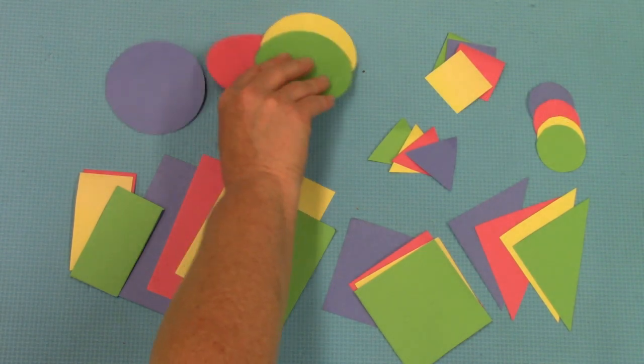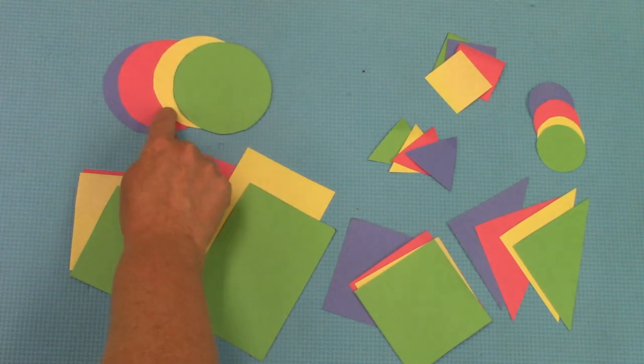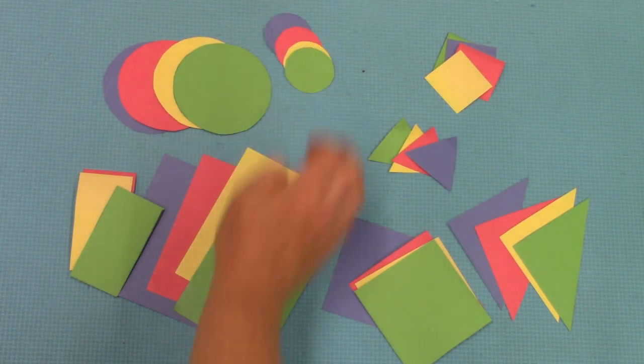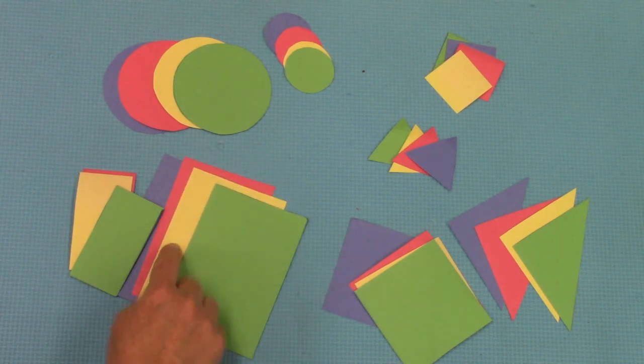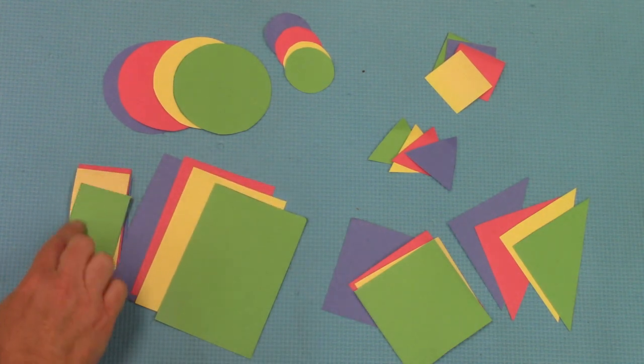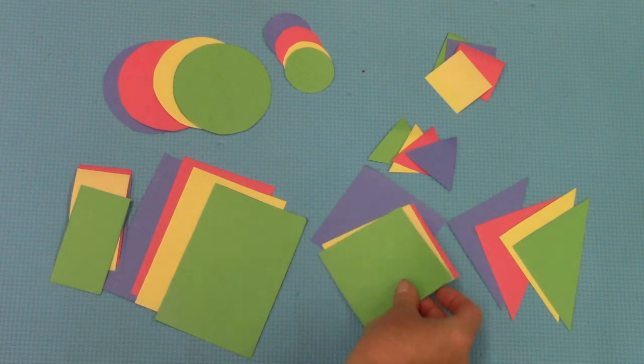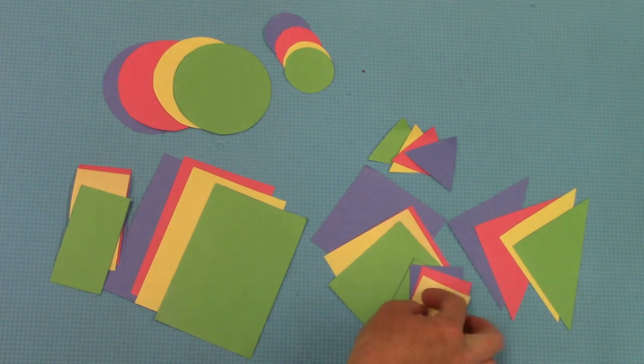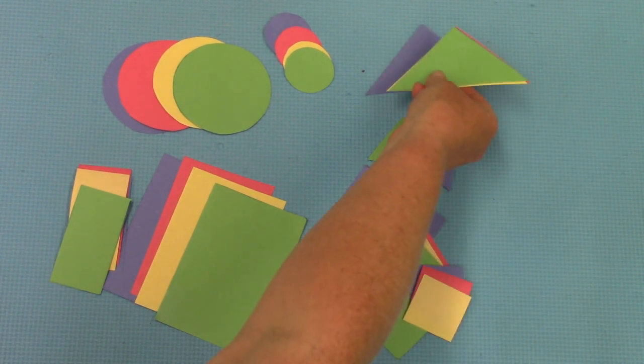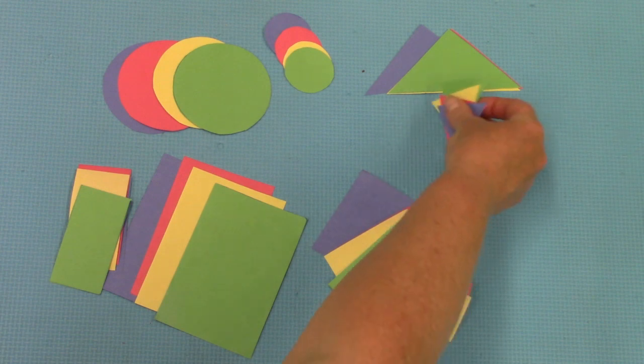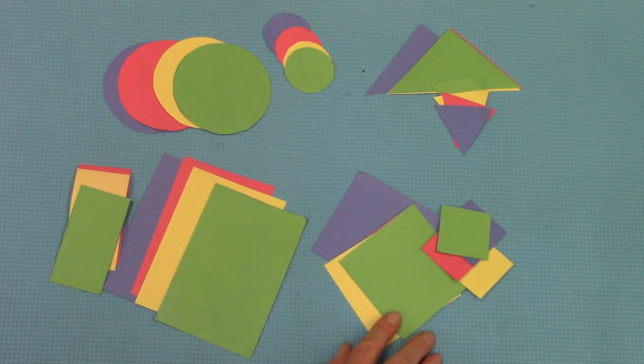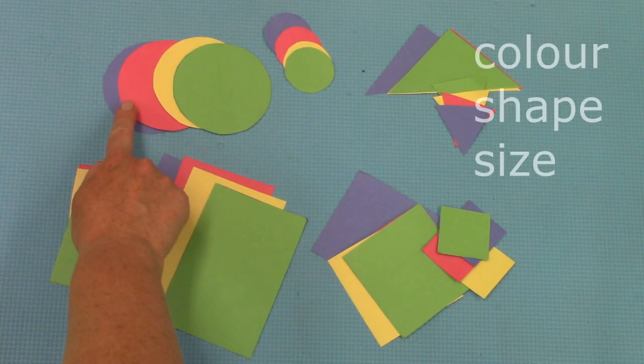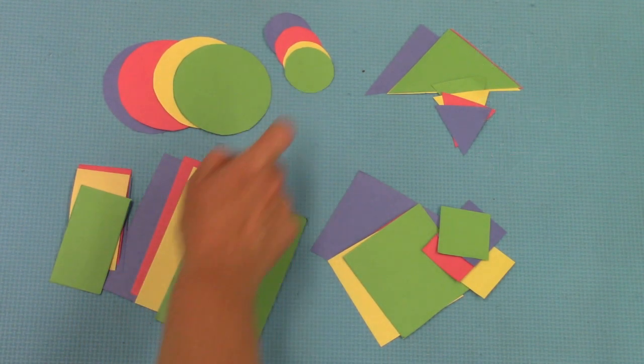So let's take a look. We have big circles and we have little circles. We have large rectangles and small rectangles. We have large squares and small squares. We have large triangles and small triangles. So all of our geometric shapes here can be sorted by color, shape, and size.